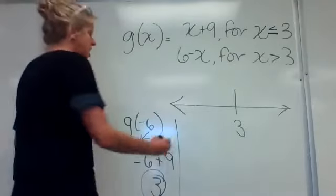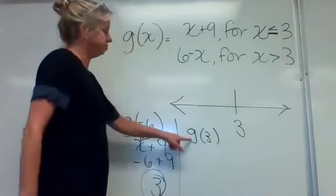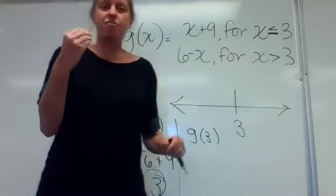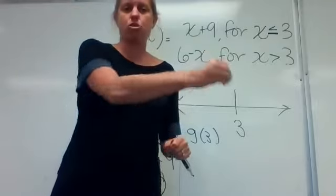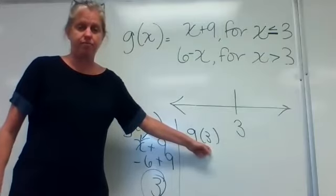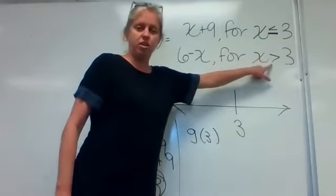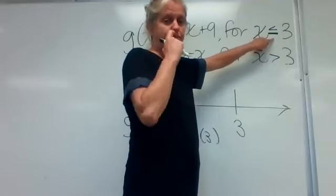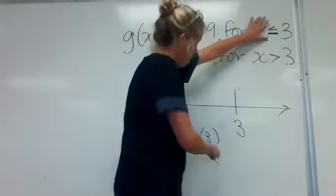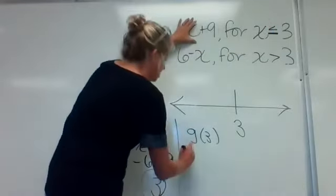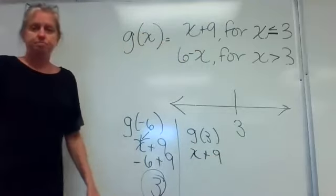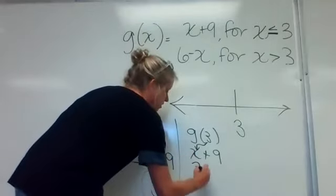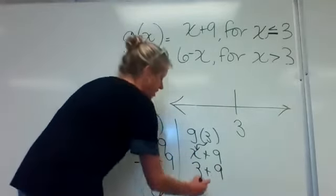Second part, it wants me to find g of three. Three is a number represented on this number line. I come up here and find the piece that says x equals three. This one says greater than three — we are not greater than three, we are three. The other one says less than or equal to, so there's my equal-to bar. It goes in the x plus nine part. Plugging three in: three plus nine gives me twelve.